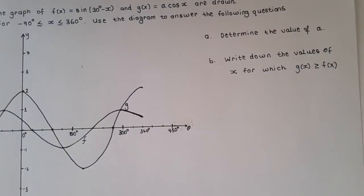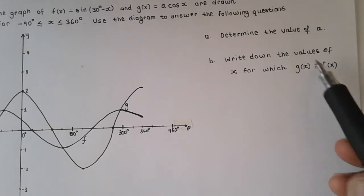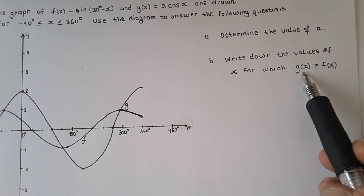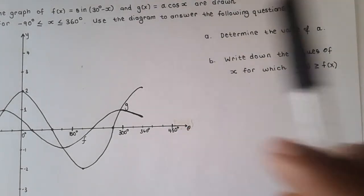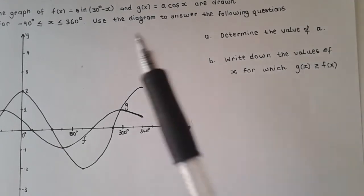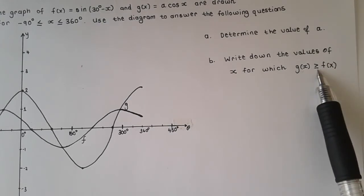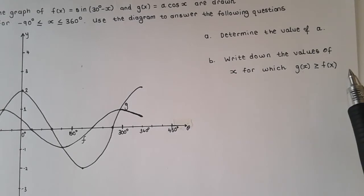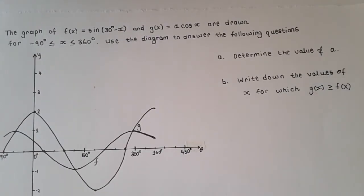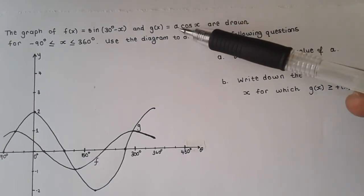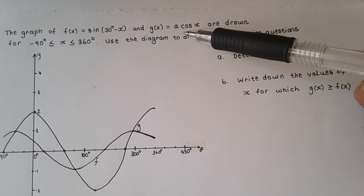Since we are looking for g(x) greater than or equal to f(x), we can understand that we're looking for the situation where the first graph — which in this case is g(x), the cosine function — is above f(x). So we're looking for where the cosine function is above the sine function, or equal to it, meaning where they intersect.